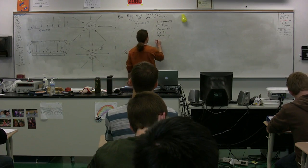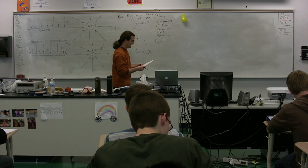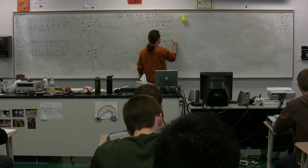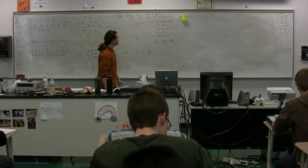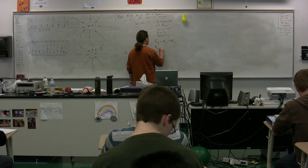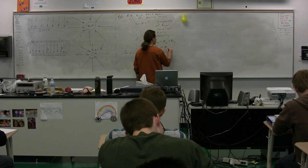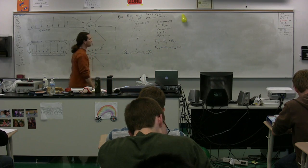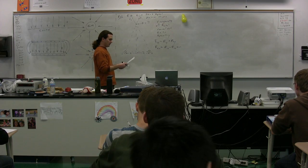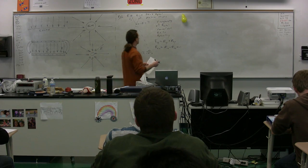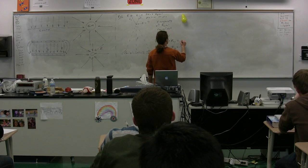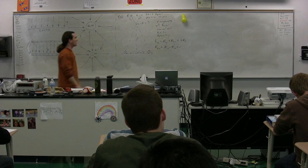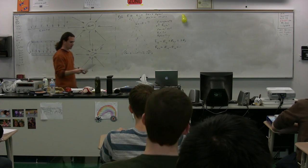The electric field total is going to be equal to the electric field one in the y direction plus the electric field two in the y direction. The electric field total in the x direction is equal to electric field one in the x direction minus electric field two in the x direction, which equals zero because those two are going to be the same.